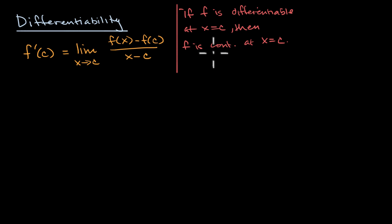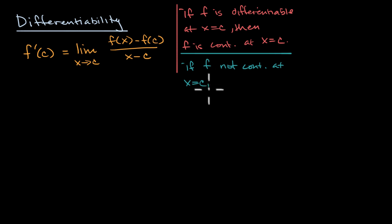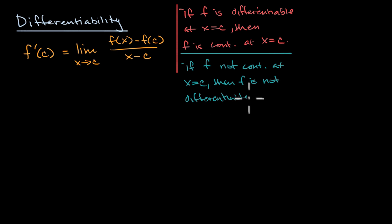That doesn't necessarily mean the other way around — being continuous doesn't guarantee being differentiable. But another way to interpret this is: if you are not continuous, then you definitely will not be differentiable. If f is not continuous at x equals c, then f is not differentiable at x equals c.